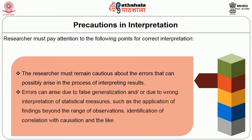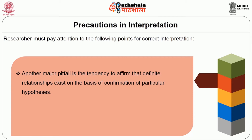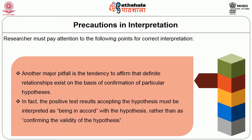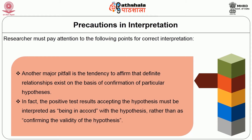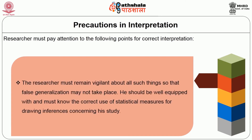Errors can arise due to false generalization or due to wrong interpretation of statistical measures, such as the application of findings beyond the range of observations, identification of correlation with causation, and the like. Another major pitfall is the tendency to affirm that definite relationship exists on the basis of confirmation of a particular hypothesis. In fact, the positive test result accepting the hypothesis must be interpreted as being in accordance with the hypothesis rather than as confirming the validity of the hypothesis. The researcher must remain vigilant about all such things so that false generalization may not take place. He should be well equipped with and must know the correct use of statistical measures for drawing inferences concerning his study.